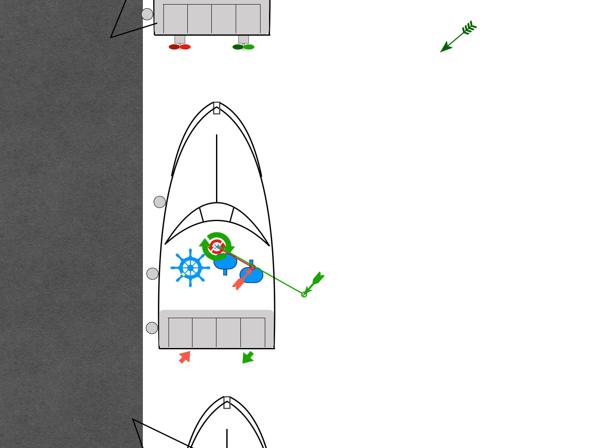We stop the turn to starboard by slightly counter-intuitively increasing forward power on the port engine. Now the turning movements cancel each other out but the thrust vectors are different. The port engine thrust vector is going to be larger than the starboard and so there'll be a residual thrust vector forward and to starboard.